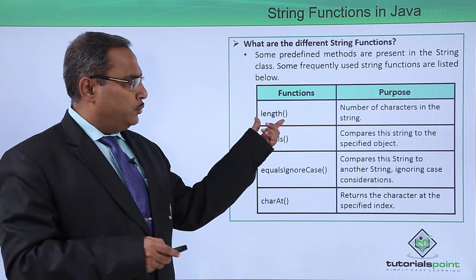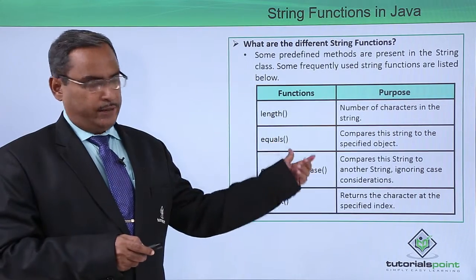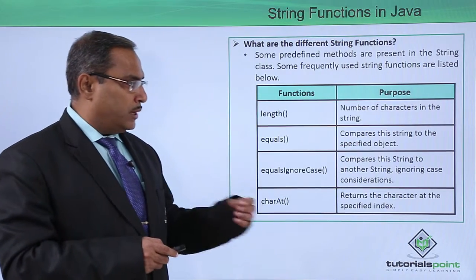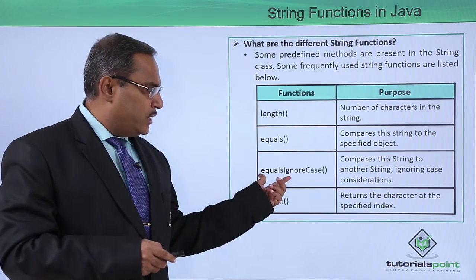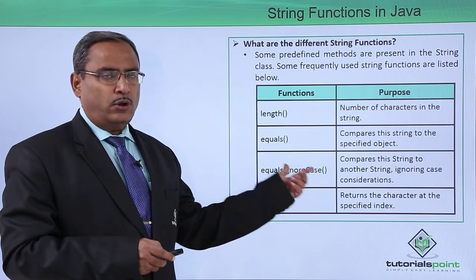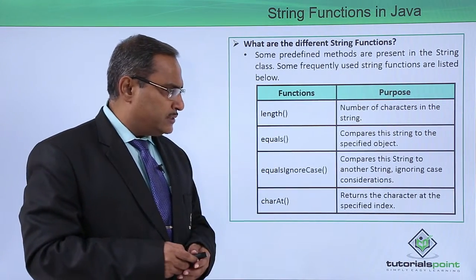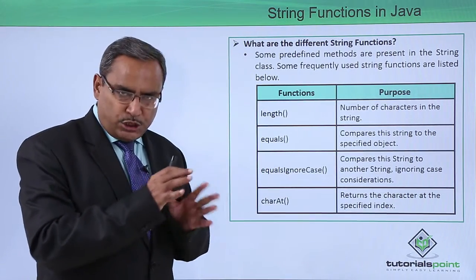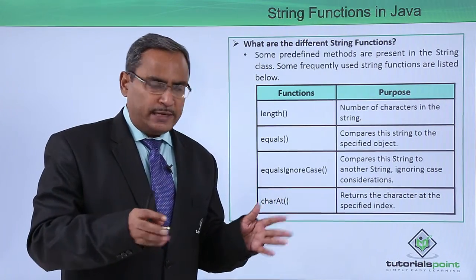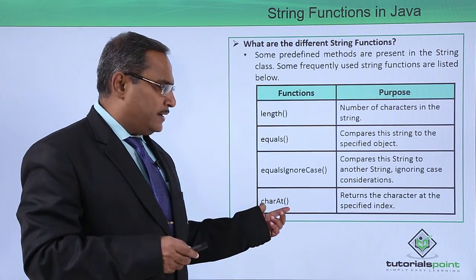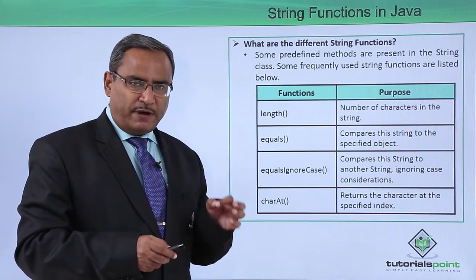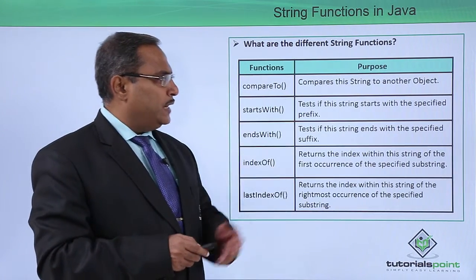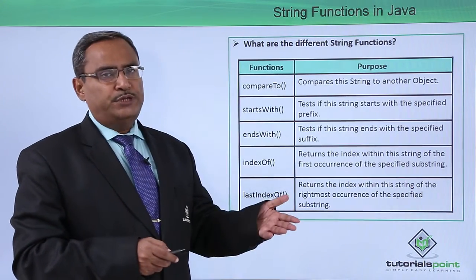The first one is length(), which returns the number of characters in the string. Next is equals(), which returns a boolean and compares this string to the specified object. Then equalsIgnoreCase(), which also returns a boolean and compares this string to another string ignoring case considerations — it will not differentiate between lowercase and uppercase letters. Then charAt(), which returns the character at a specified index of the string. compareTo() compares this string to another object.